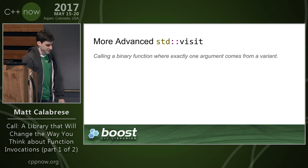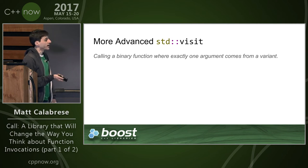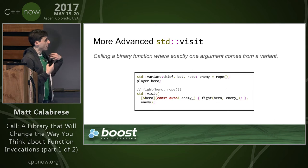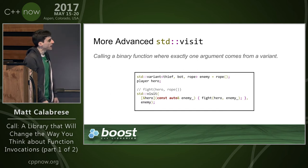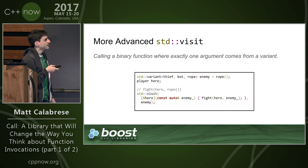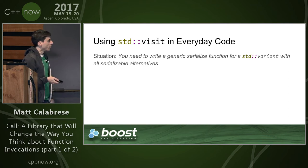More advanced uses of std::visit reveal some drawbacks. Imagine you have a binary function where one argument is a variant and the other is a known compile-time type. What you'd like to do is just call 'fight' with the concrete type and the expanded enemy. Instead, you have to write a lambda to bind in one of your objects and forward along the call to the enemy. For a more practical example: imagine writing a generic serialize function for a variant.